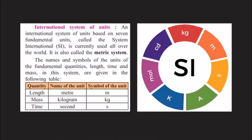There is an international system of units, also called the metric system. All over the world, everyone uses these units, so it is called the international system of units. It is based on seven fundamental units called the SI (Système International) units. For the three main quantities: length is measured in meters (symbol M), mass in kilograms (symbol kg), and time in seconds (symbol S). These units are used everywhere across the world.